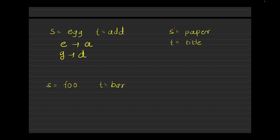In example two, S is 'paper' and T is 'title'. P is mapped with T, so whenever I come across P, it can be replaced with T — there are two P's, both map to T. Then A is mapped with I, E can be replaced with L, and R can be replaced with E. So this is again an isomorphic string.